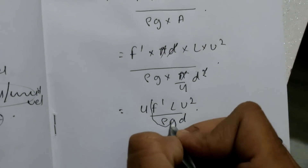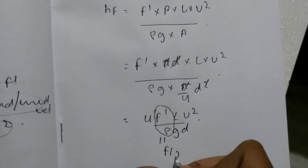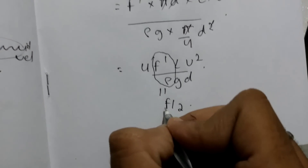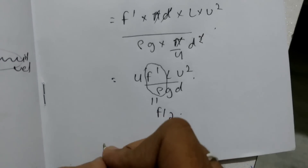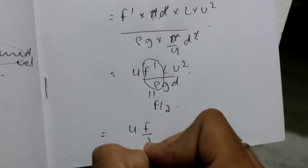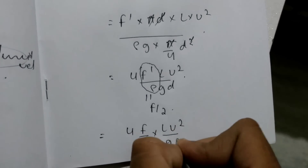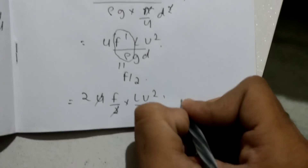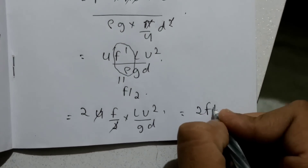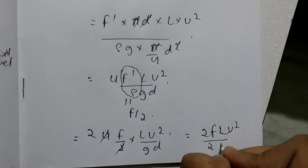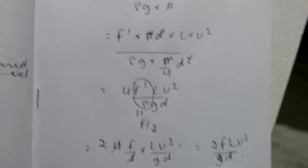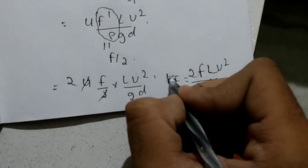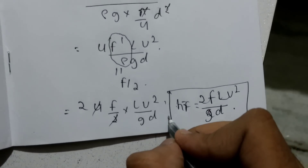Now we write F'/ρ = f/2, where f is called the coefficient of friction — this is a standard formula. Substituting: HF = 4f/2 × L × V² / (g·D) = 2f·L·V² / (2g·D)... Wait — simplifying: HF = 4f·L·V² / (2g·D). This is the Darcy-Weisbach equation. We started with Bernoulli's theorem and frictional resistance, and just simplified.